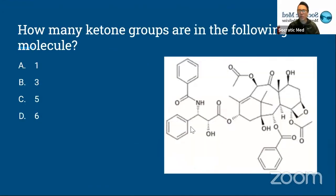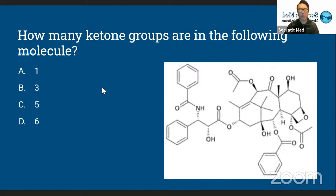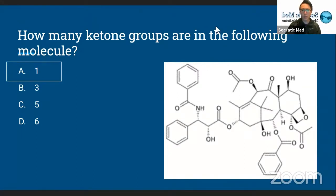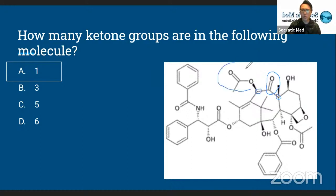How many ketone groups are in the following molecule? There were some mixed responses, but the answer is A — there's only one true ketone group in this molecule. There are a few amide groups and a few esters that are trying to confuse you. The true ketone consists of a carbonyl with two carbon-based alkyl groups attached to it — this is the only group that has two carbons attached to the carbonyl. All the other groups are esters or amides, making this the only true ketone group in the molecule.